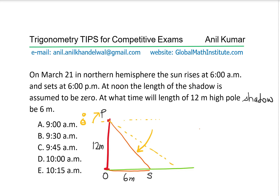Let's call this angle theta. So tan theta is equal to the opposite side O-P over the adjacent side O-S. In this case it is 12 over 6, which equals 2. So the angle theta is tan inverse of 2, which should be slightly more than 60 degrees.